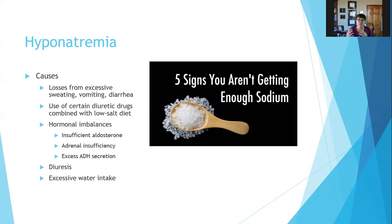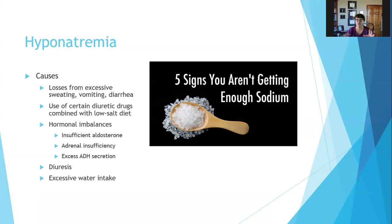Some diuretic drugs spare sodium and lose potassium, while others spare potassium and lose sodium. You and your doctor can decide based on your values which one you need. Hormone imbalances can also cause hyponatremia — insufficient aldosterone, adrenal insufficiency, or excess antidiuretic hormone secretion. Diuresis causes sodium loss because when you get rid of fluid, you get rid of sodium.